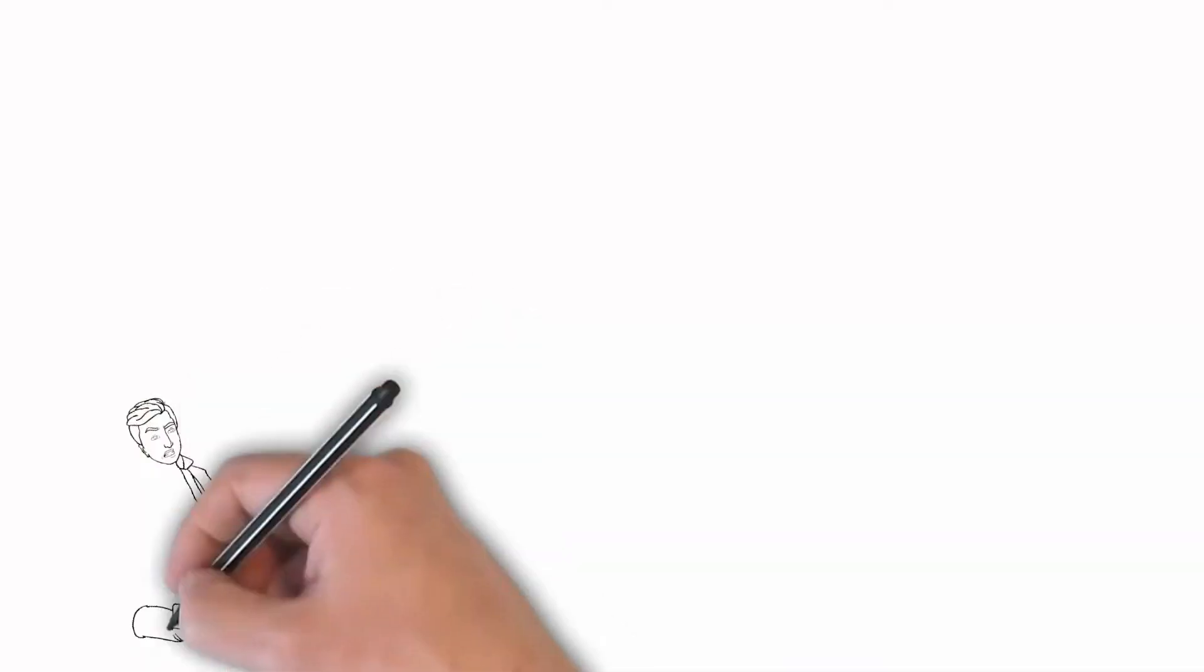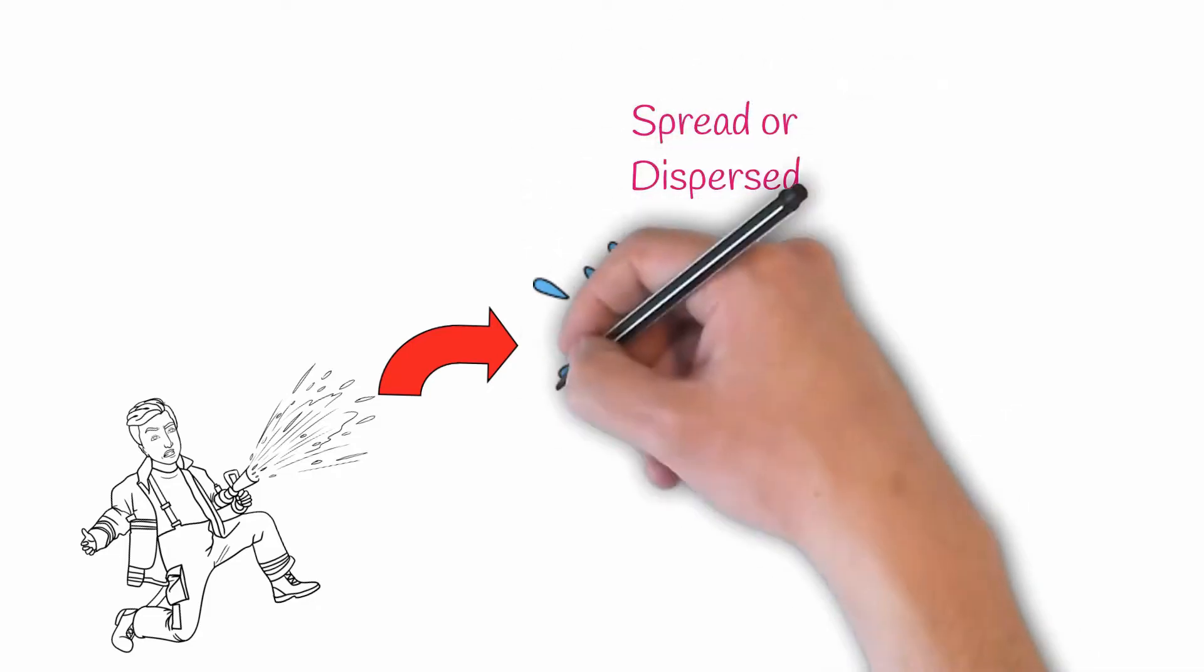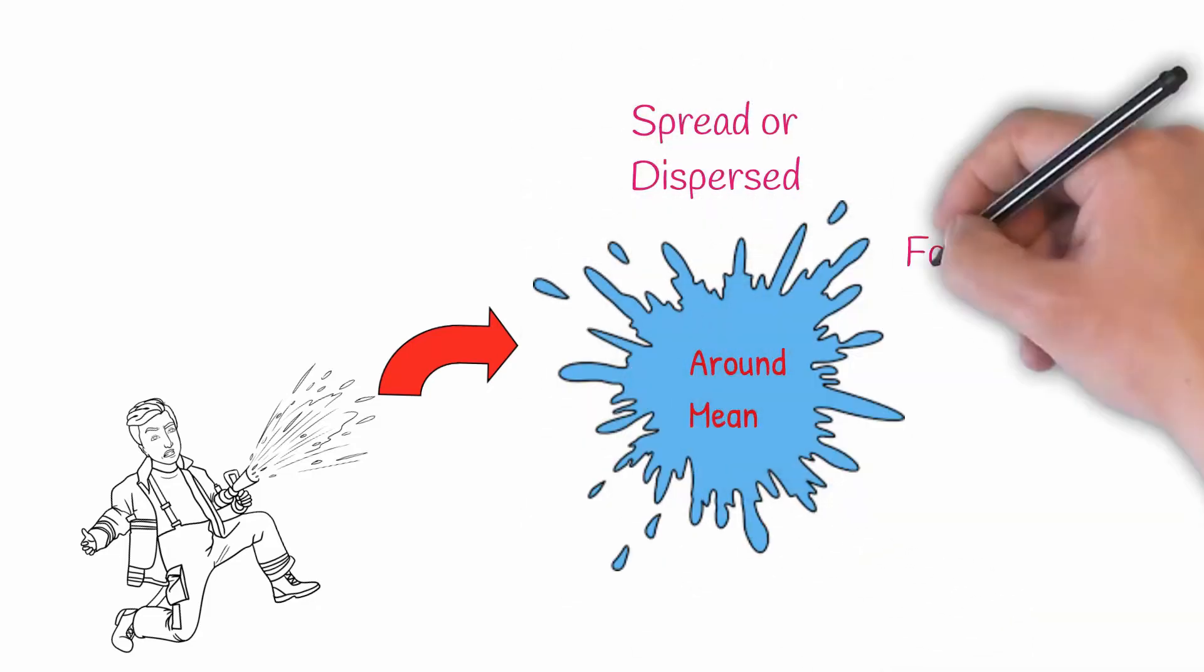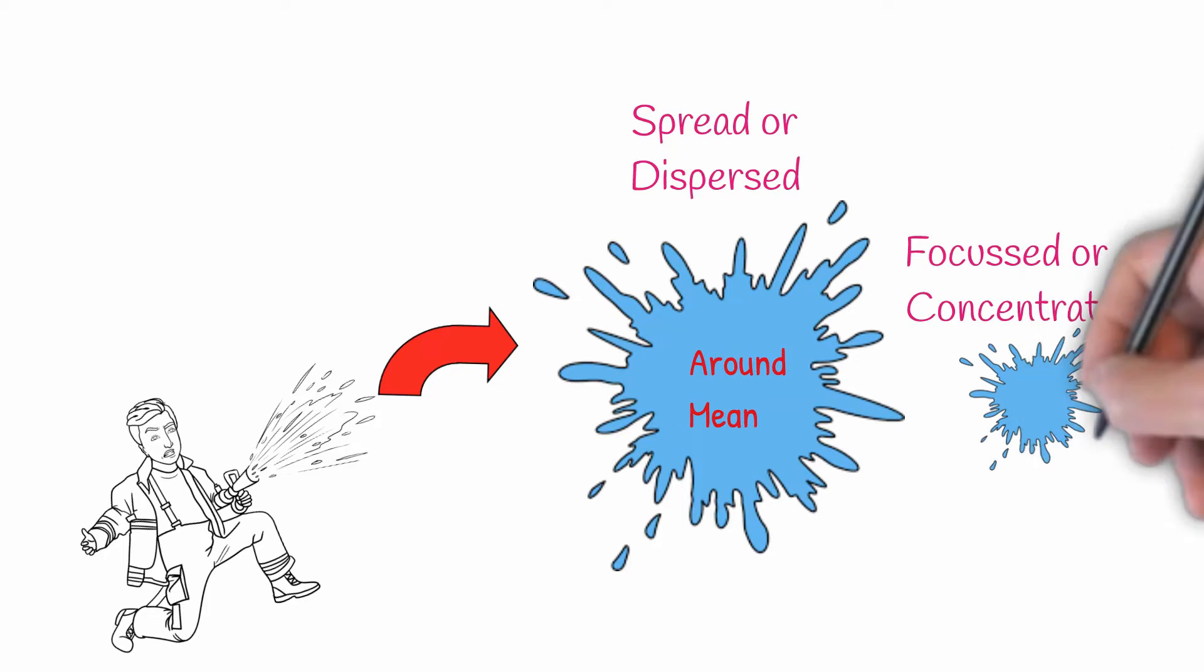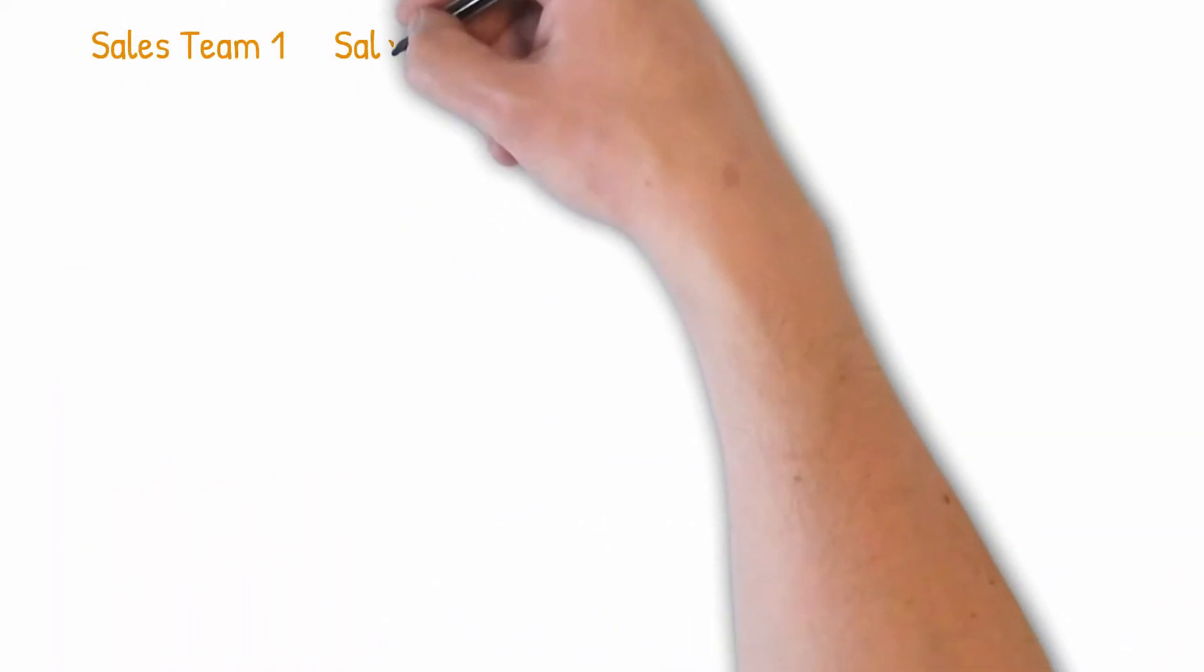Let's get on by understanding variability in statistics. When we want to measure or study the spread of the data or understand how much dispersed the data is or how much focused or concentrated the data is, we will be measuring variability or the dispersion.